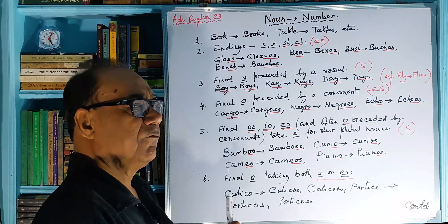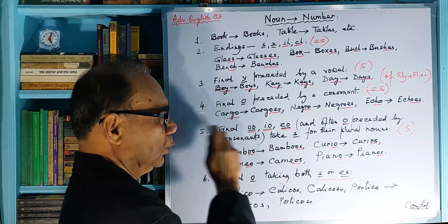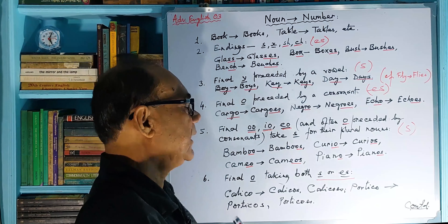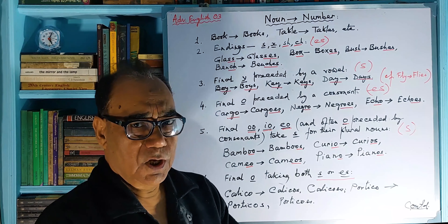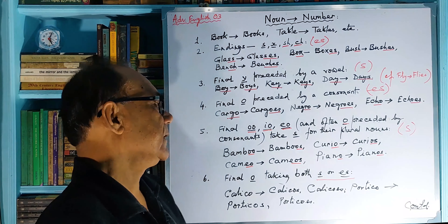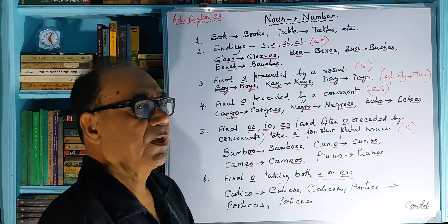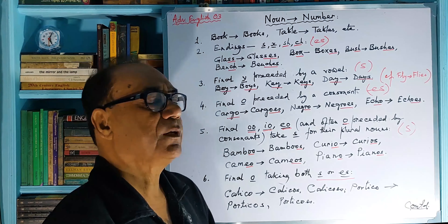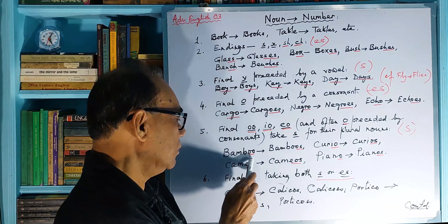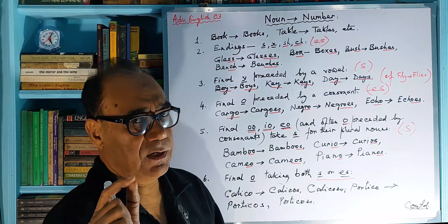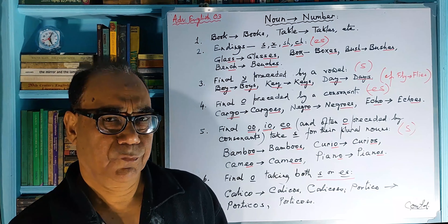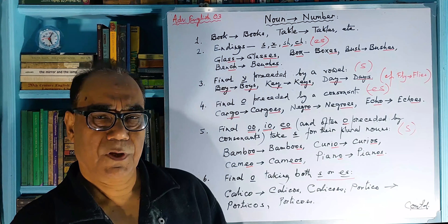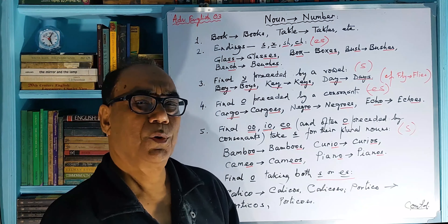Number five: final O with OO, IO, or EO — meaning almost two vowel sounds coming together — and also O preceded by a consonant in musical or borrowed terms, takes S. So 'bamboo' has double O and becomes 'bamboos' with single S. 'Curio' becomes 'curios.' 'Cameo' becomes 'cameos.' 'Piano' becomes 'pianos.' This is simple.